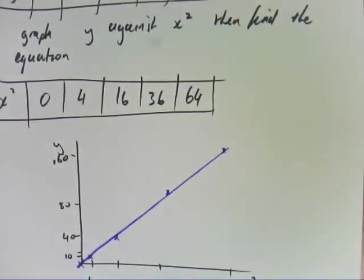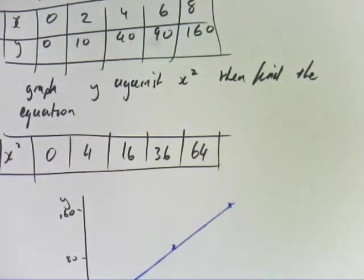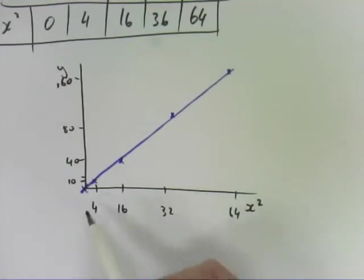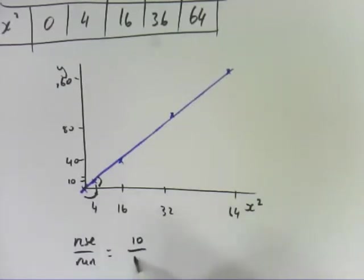So we can now work out the gradient of that straight line. We know the y-intercept. We just need to work out the gradient. So for a run of 4, we rose 10. Rise over run is the gradient. So we rose 10 over a run of 4, which is 2.5. And that's m.